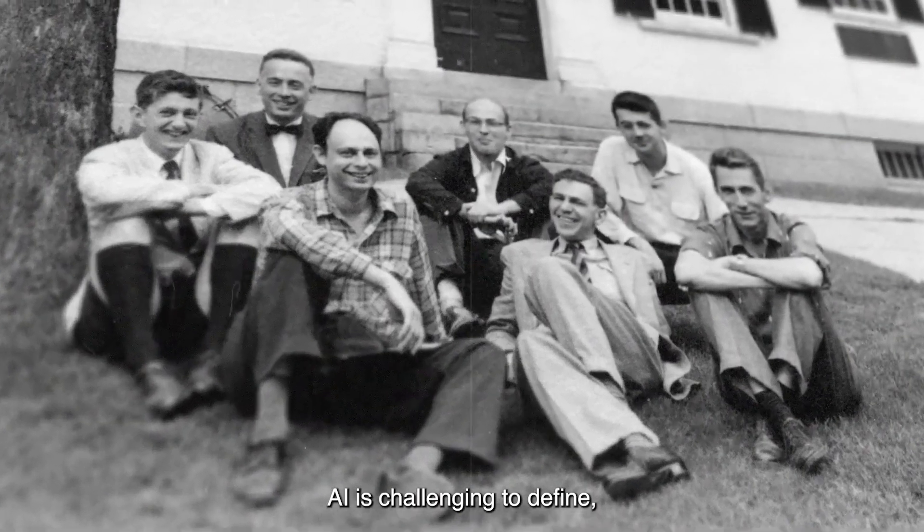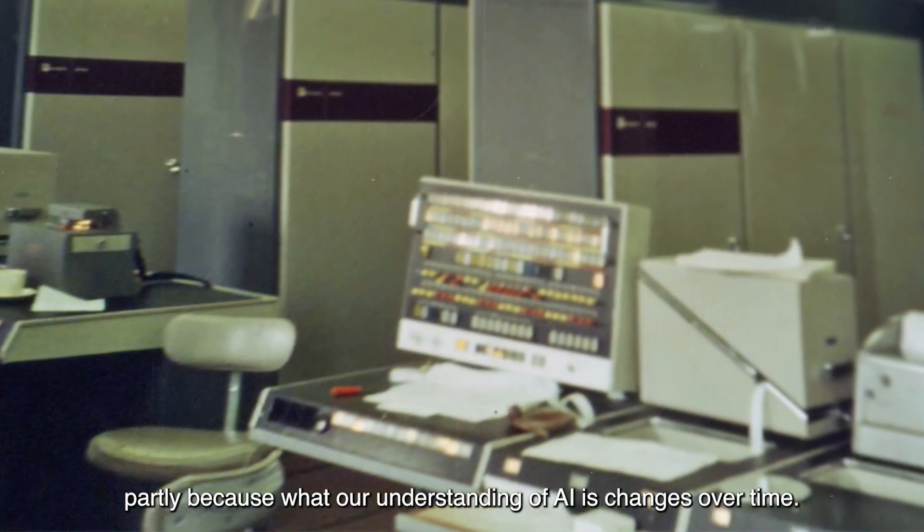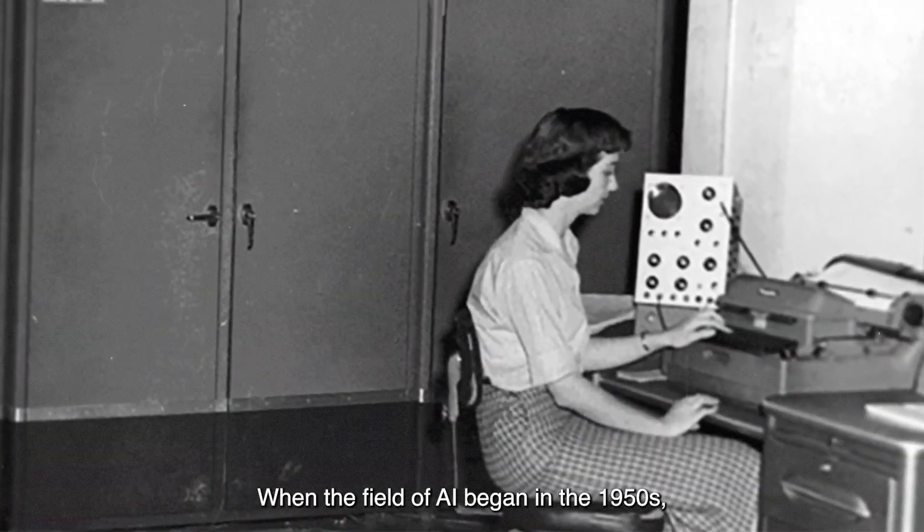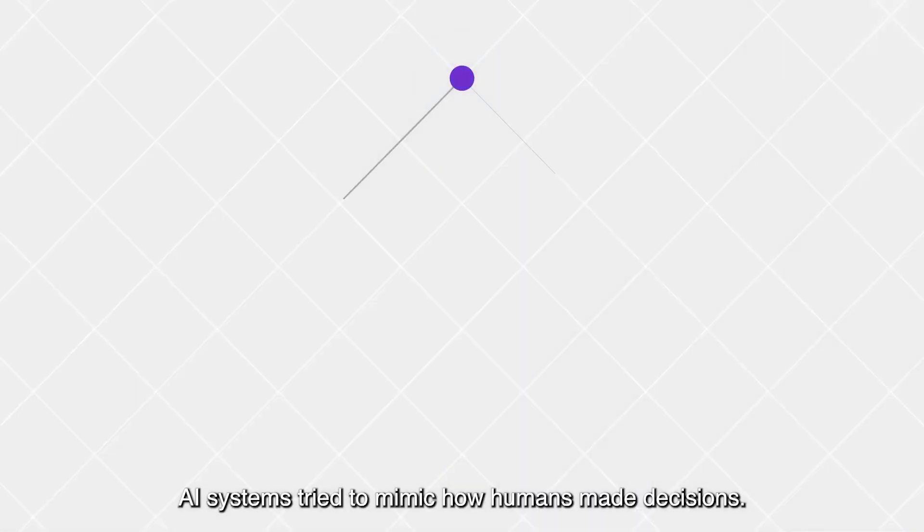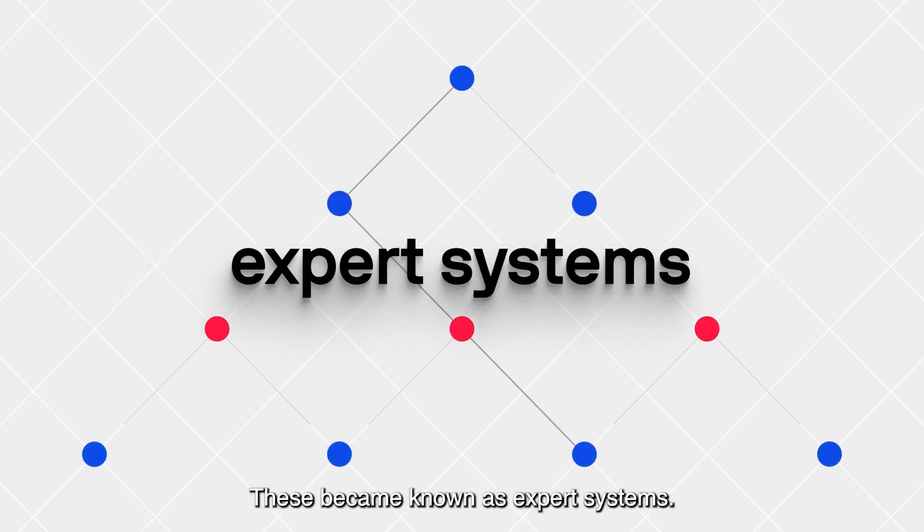AI is challenging to define, partly because our understanding of AI changes over time. When the field of AI began in the 1950s, AI systems tried to mimic how humans made decisions. These became known as expert systems.